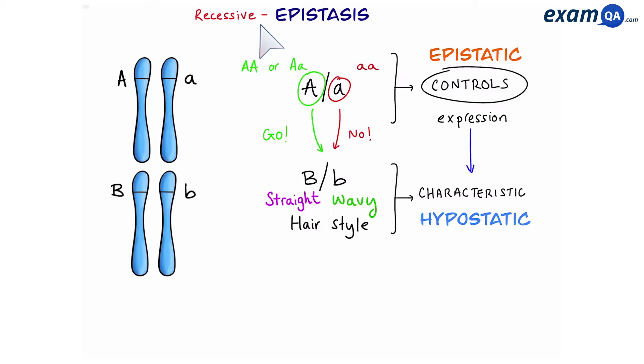Epistasis literally means 'to cover.' If the recessive version of the epistatic gene is covering or preventing the next gene from being expressed, then we say it is recessive epistasis.